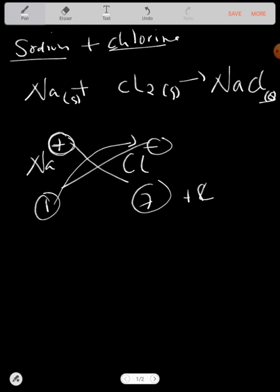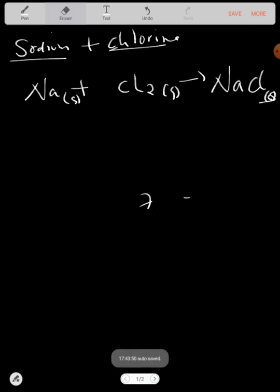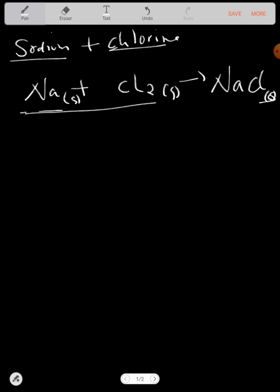Since here there's one and here there's one, they just swap like that so you form sodium chloride, NaCl, as a solid. How do you make sure that you've balanced this equation?